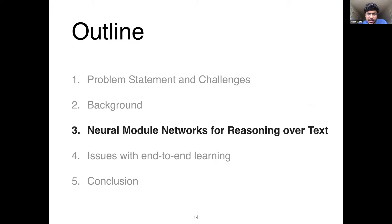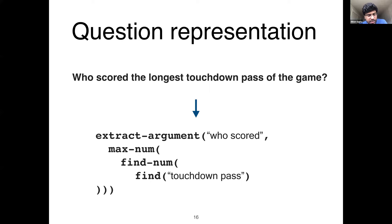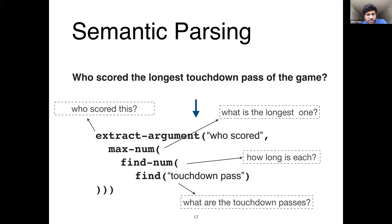Our approach — neural module networks for reasoning over text — is an end-to-end neuro-symbolic approach for question answering with interpretable decision making that is compositional and modular in nature. Similar to semantic parsing, our model parses the question into a formal meaning representation, which is a program. The functions within this program roughly correspond to the sub-questions a human would break the question into.